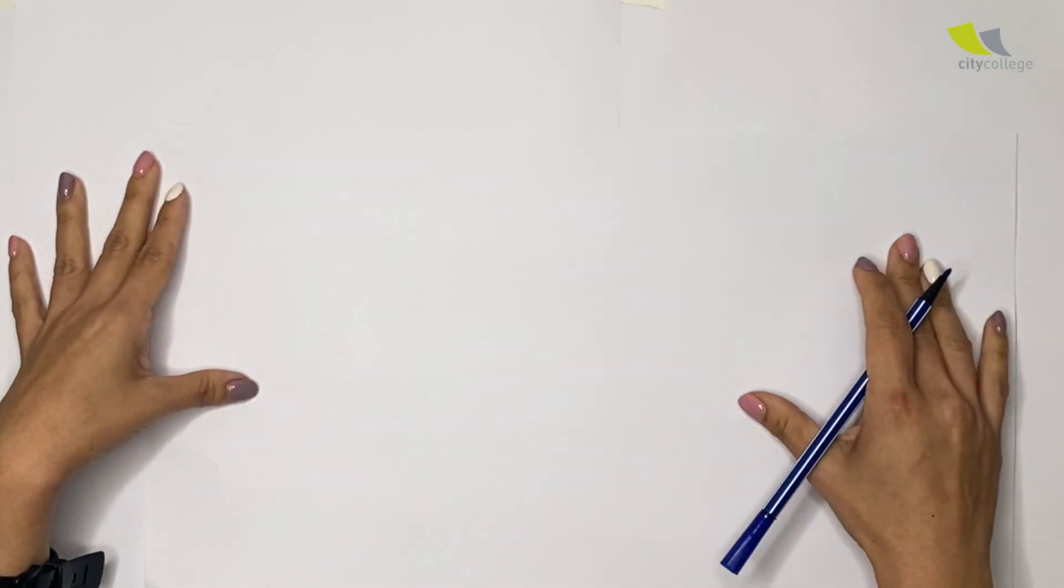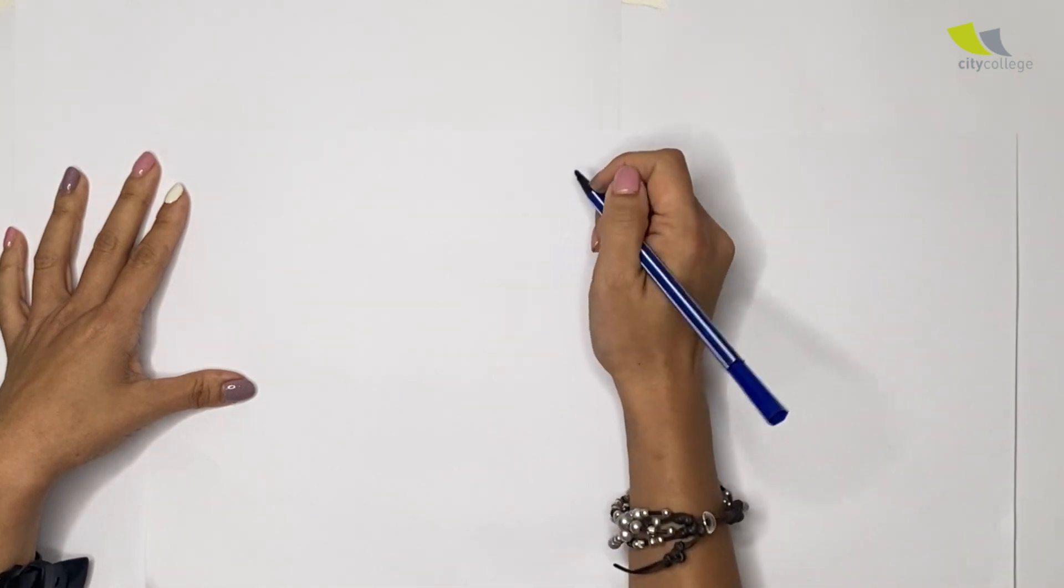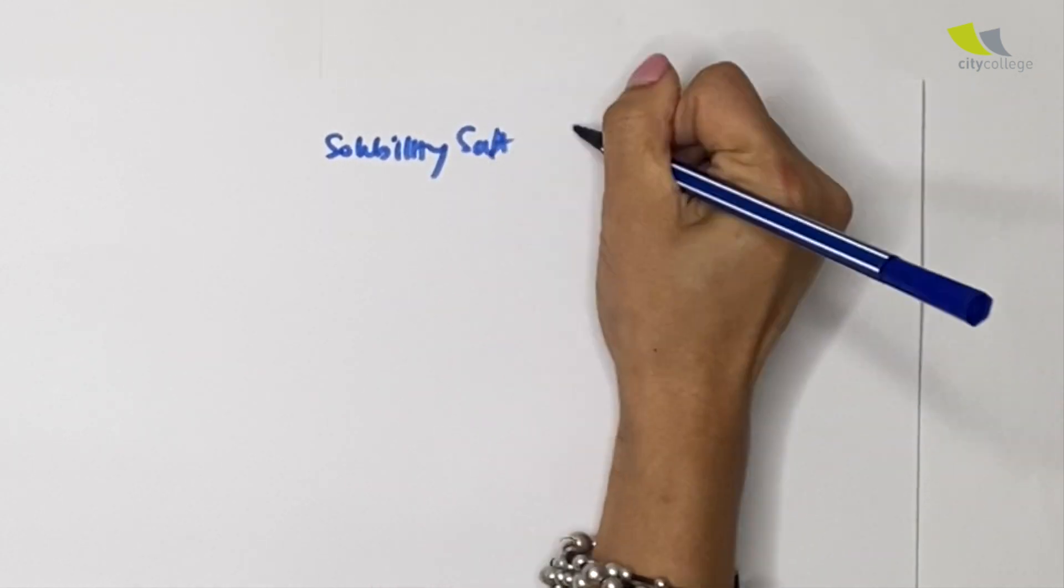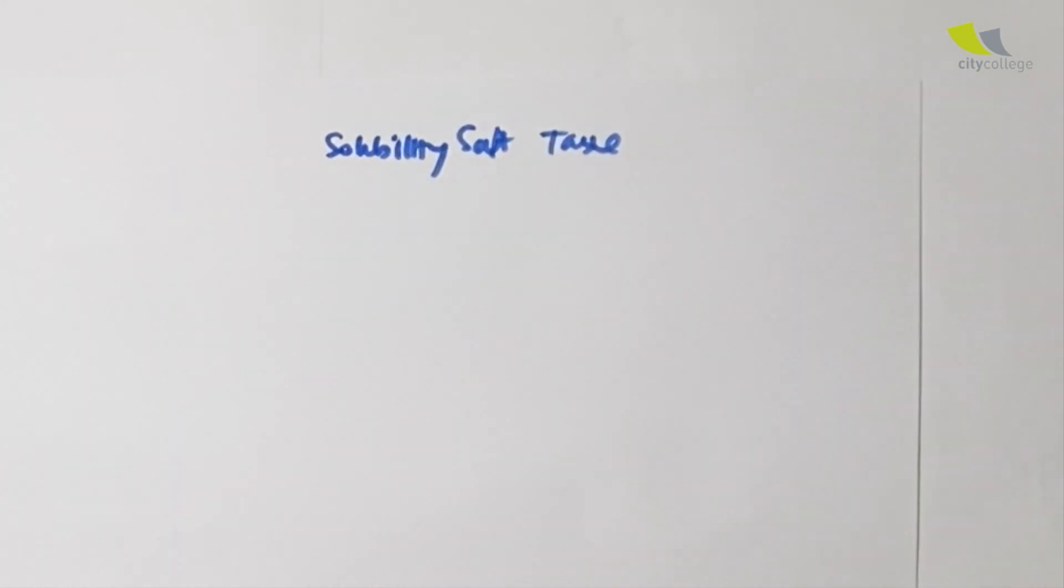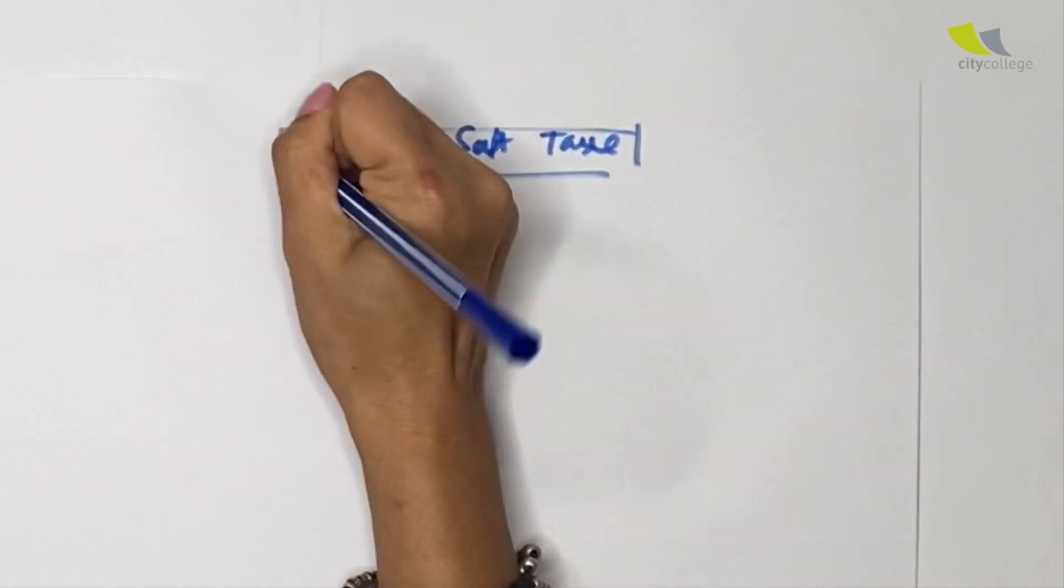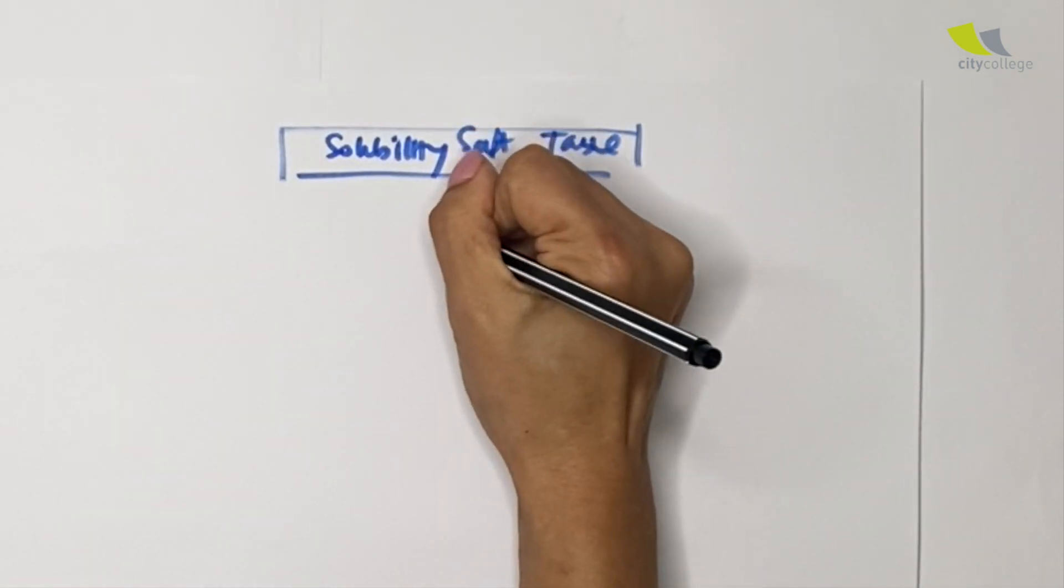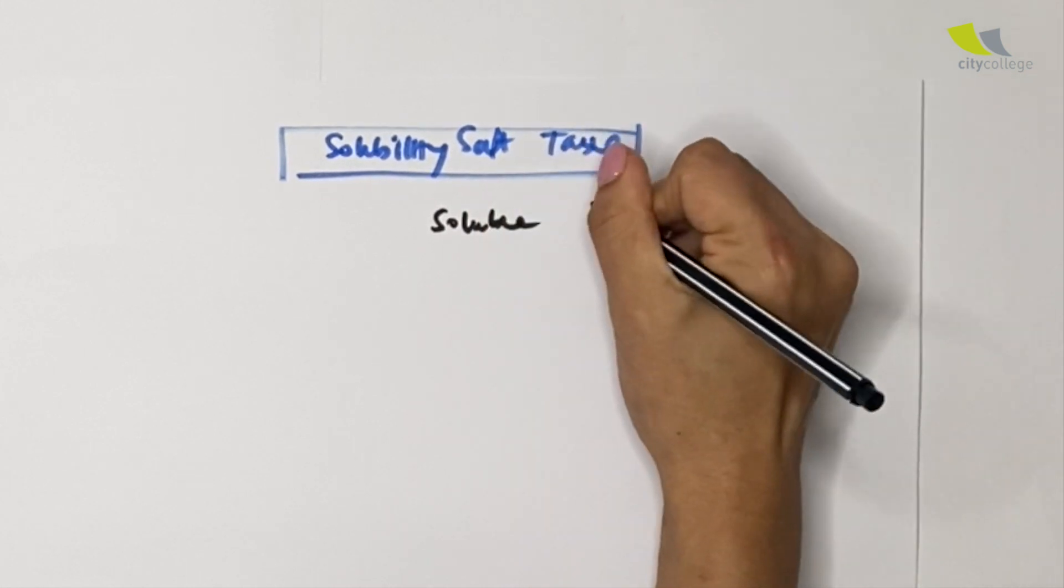Well, first of all, before I even start off with the paper, one very important table that I hope you can take some time to memorize is the solubility salt table. Now the word already says it's a solubility salt table, so obviously I will have soluble and insoluble.